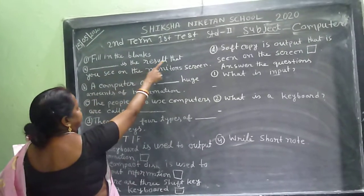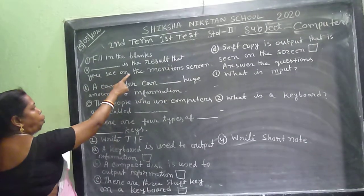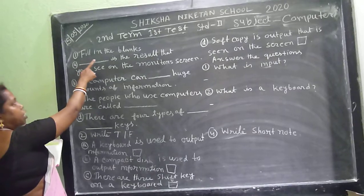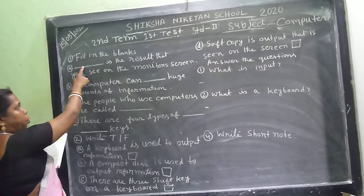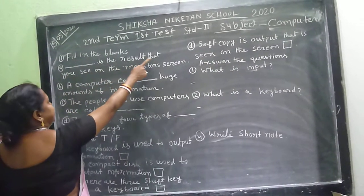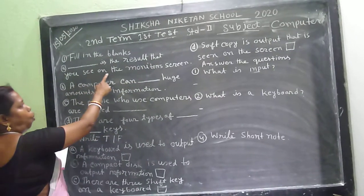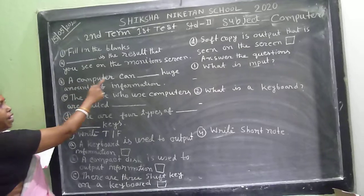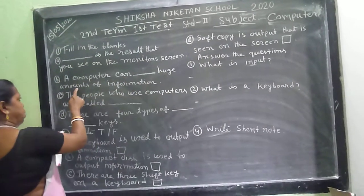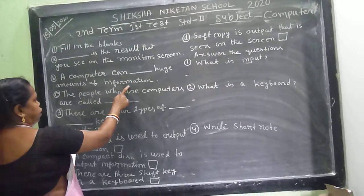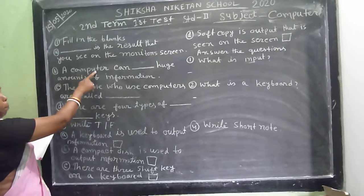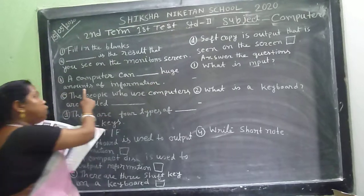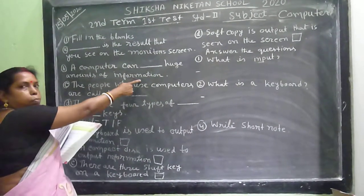The result that you see on the monitor screen is the soft copy. Soft copy is the result that you see on the monitor screen. A computer can store huge amounts of information.